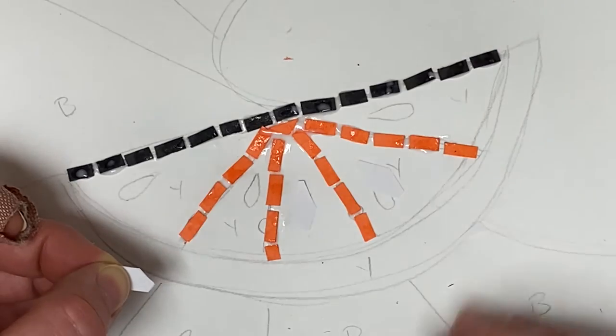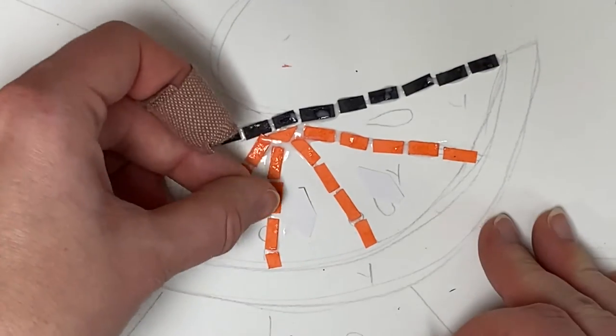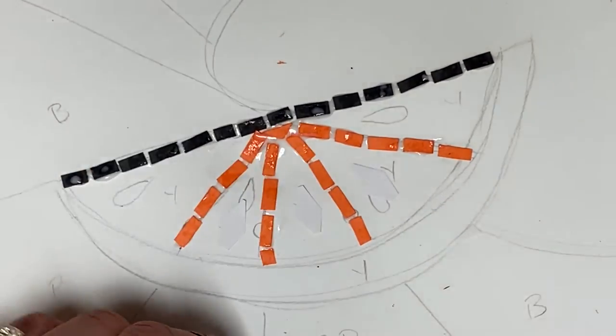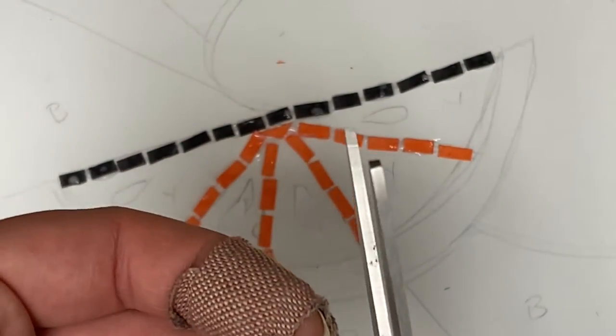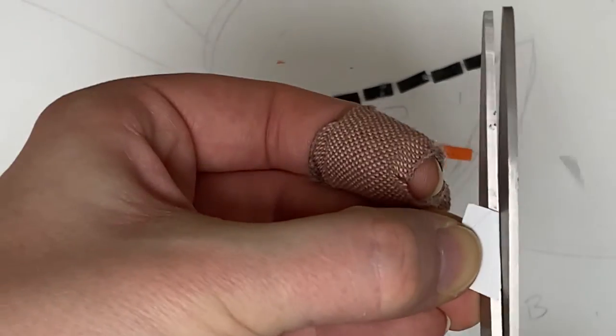Now I'm going to cut my seeds. So if I want them to be similar, I just put one on top of the other and use it as a stencil of some sort.